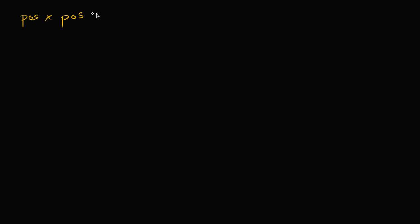When we first learned to multiply and divide positive and negative numbers, we saw that if you have a positive number times a positive number — I'm just writing 'pos' short for positive — that is of course going to be equal to a positive number. You saw that even before you learned about negative numbers.